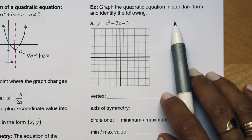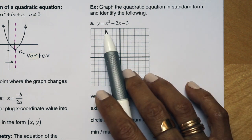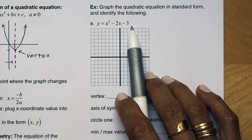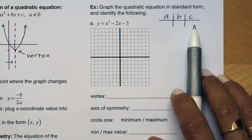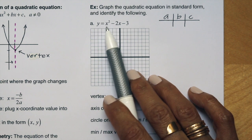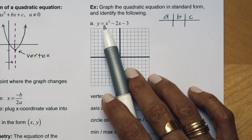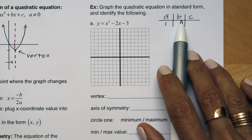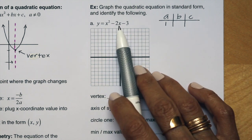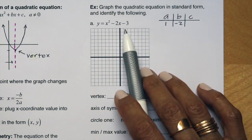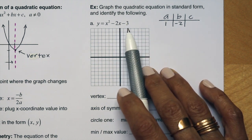The first example says: graph the quadratic equation y equals x-squared minus 2x minus 3. Set up an ABC chart. a is the value in front of x-squared, so a equals positive 1. b is the value in front of the x term, so b equals negative 2. c is the constant with no variable, so c equals negative 3.